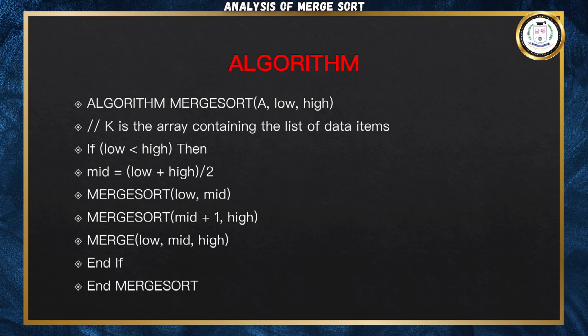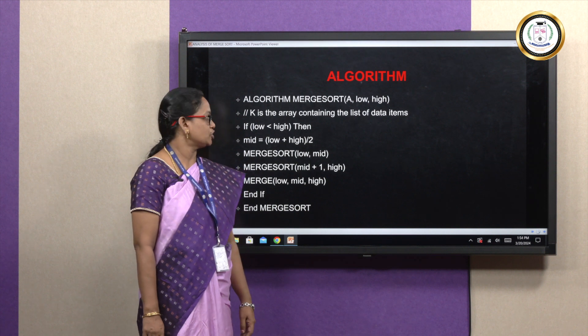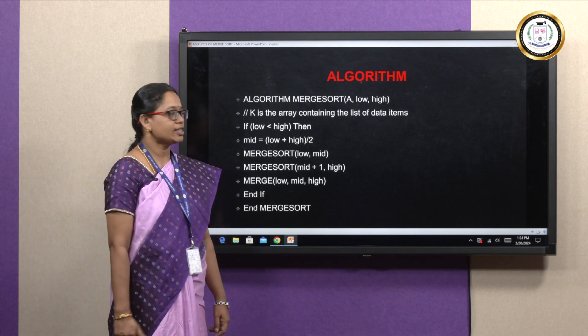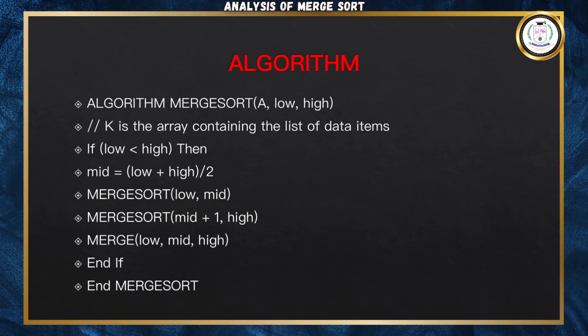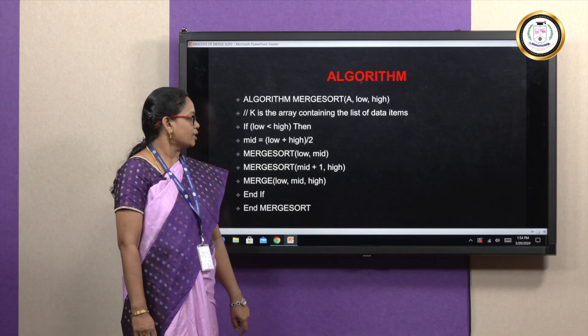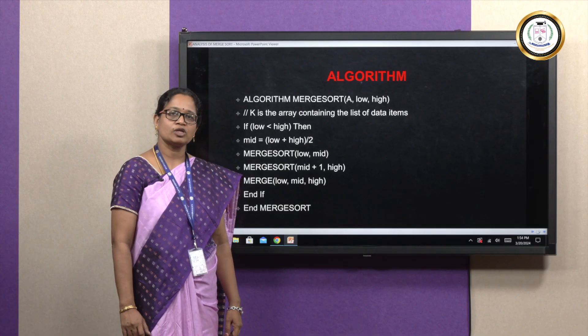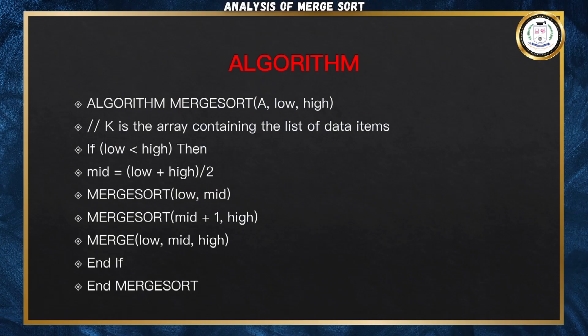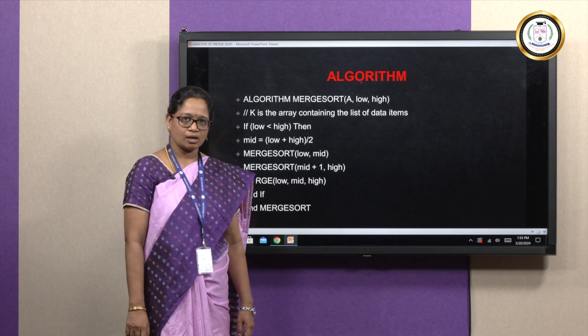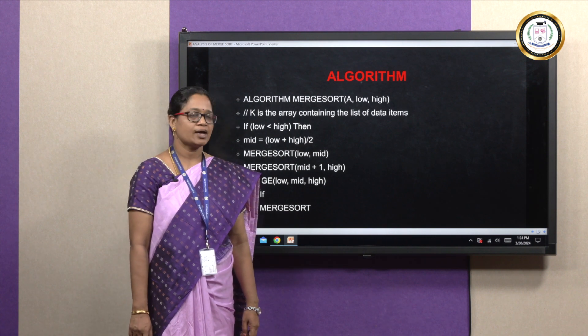The parameters passed here are the input array A, low and high — these are the index positions. If low is less than high, then the middle value is found out. The merge sort procedure is called for the index positions low and mid. Again, the merge sort procedure is called for the next subarray, that is for the index positions mid plus 1 to high. Then the two sorted arrays are combined by calling the merge procedure, with parameters low, mid and high.